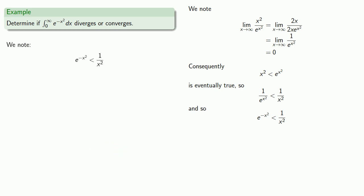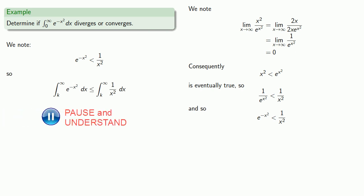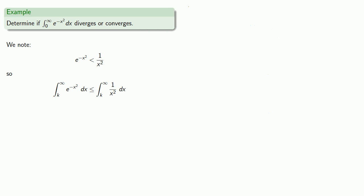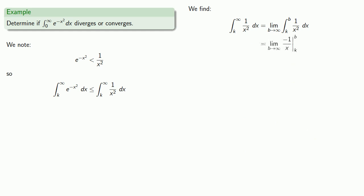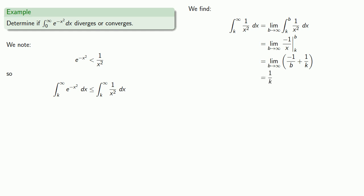So we know that the integral from k to infinity of e^(−x²) dx is less than or equal to the integral from k to infinity of 1/x² for some value k. This work is only useful if this larger integral converges, so let's check. The integral from k to infinity of 1/x² is an improper integral, so it's going to be the limit as b goes to infinity of the integral from k to b of 1/x². We'll find the integral and take the limit, which is finite, so our integral converges, and therefore our smaller integral converges.